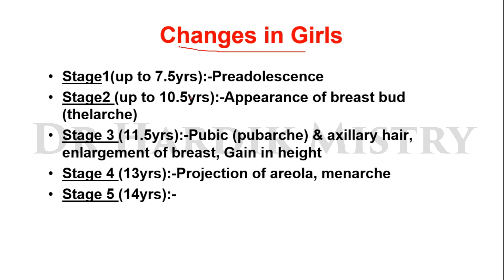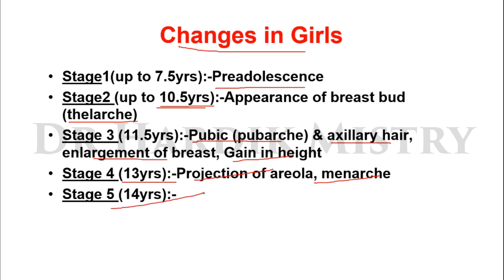Changes in girls: Stage 1 — up to 7.5 years, pre-adolescence. Stage 2 — up to 10.5 years, appearance of breast bud, known as thelarche. Stage 3 — from 11.5 years onwards, development of pubic hair known as pubarche, development of axillary hair, enlargement of breast, and increase in height. Stage 4 — 13 years, projection of the areola and menarche, meaning the first menstrual period begins.